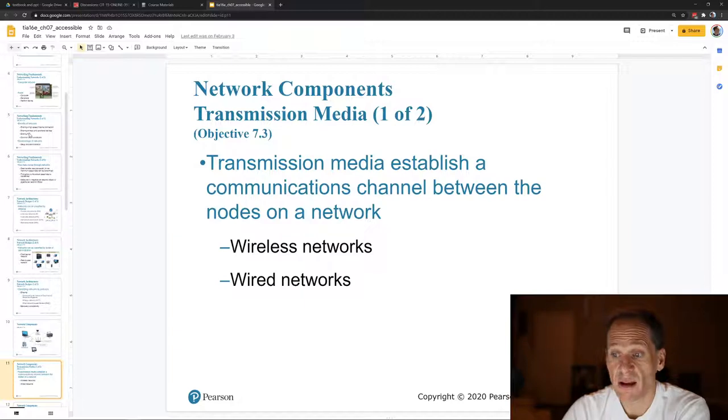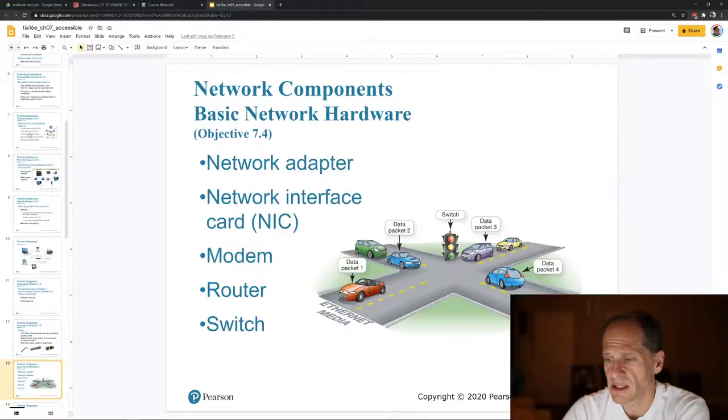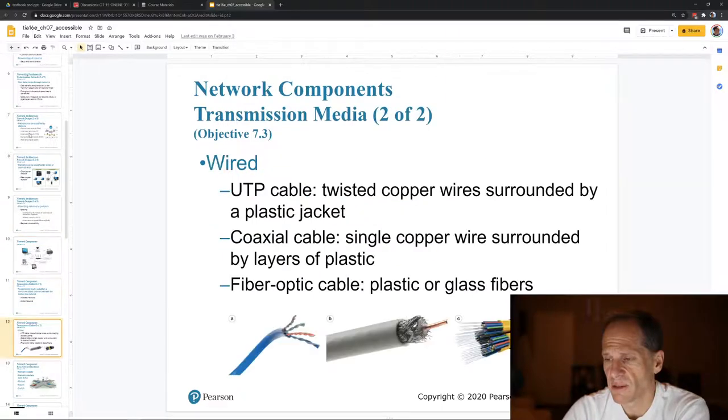And then we have how we connect devices. We connect them wirelessly or we connect them with wires. And if we're going to do wires, we've got twisted pair there as A. We've got coaxial as B. And we have fiber optic as C. So that's wired connection. And then the wireless connection would be the Wi-Fi router.